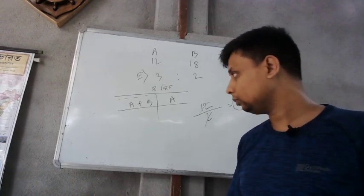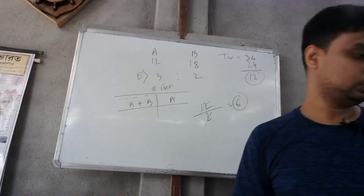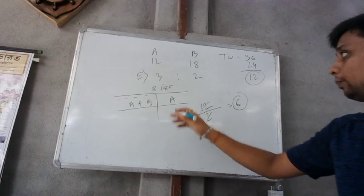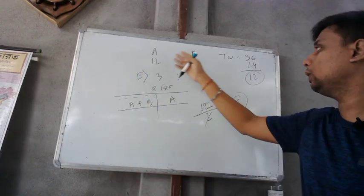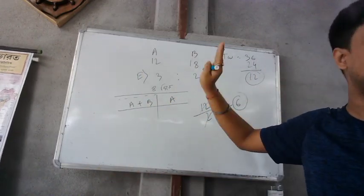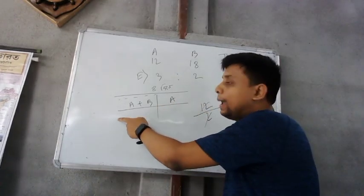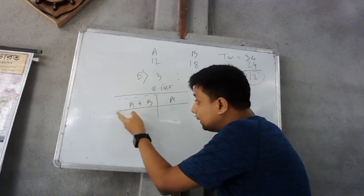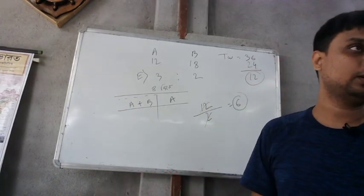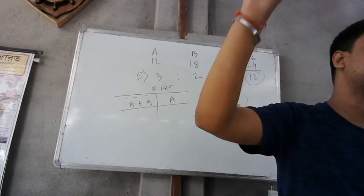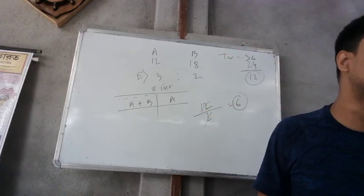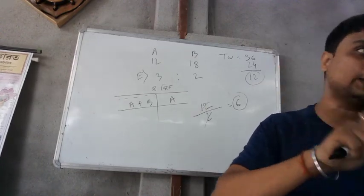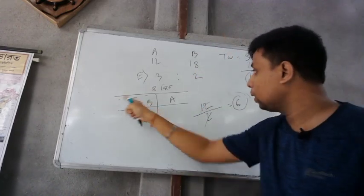Clear? How did B work? A work for 12 days, B work for 18 days. This is 3 to 2. We said that A, B, X. How did B work? 8 days.